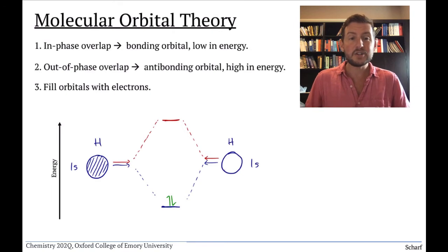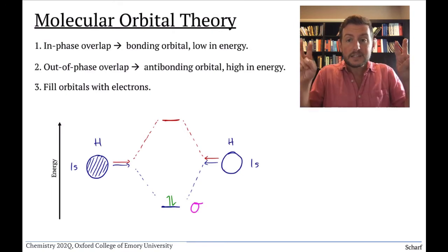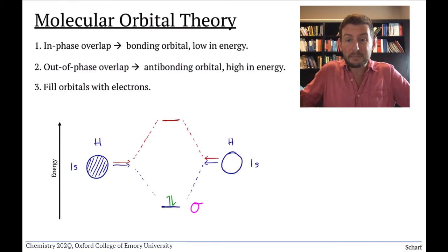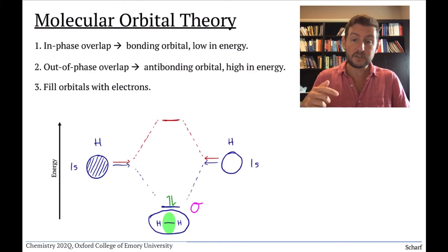The electrons in H2 occupy a sigma bonding orbital. Sigma, because the two individual atomic orbitals overlapped directly, and bonding, because the majority of the orbital resides between the two nuclei. If an electron occupies this orbital, it holds the atoms together.